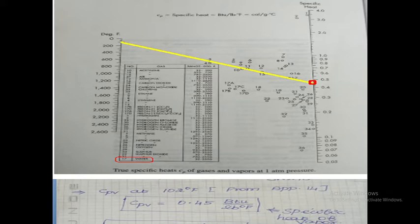We refer that book. How to read specific heat of vapor at a given temperature. What is the given temperature? TWB — wet bulb temperature at the outlet — that is equal to 102 degrees Fahrenheit. This is Appendix 14 from Unit Operations of Chemical Engineering by McCabe and Smith.